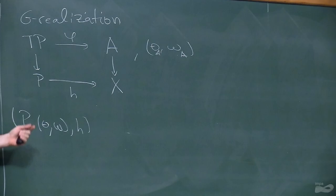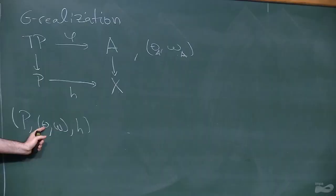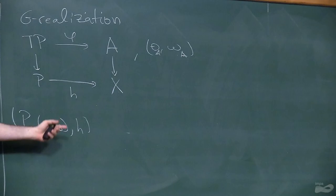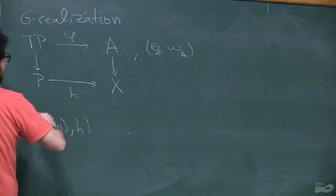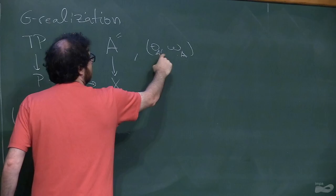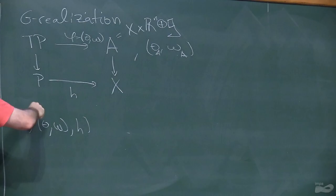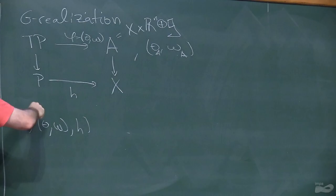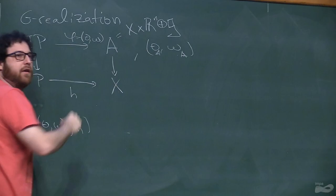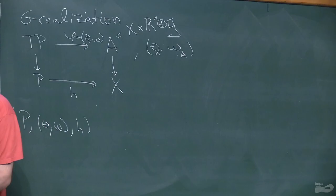If you start with a G-structure, its tangent bundle is a G-structure algebraid — it comes with a G-action lifted to TP, a tautological form, and a connection. If you put A in canonical form using the connection and the tautological form, this is just the trivial bundle with fiber R^n plus G. The map phi is just (theta, omega): on one component you apply the tautological form taking values in R^n, and on the other the connection form taking values in the Lie algebra.